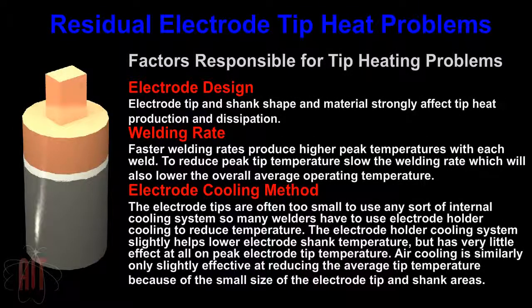The factors responsible for tip heating problems include electrode design, welding rate, and electrode cooling methods. Electrode tip and shank shape and material strongly affect tip heat production and dissipation. Faster welding rates produce higher peak temperatures with each weld. To reduce peak tip temperature, slow the welding rate, which will also lower the overall average operating temperature.